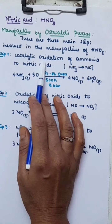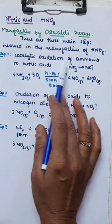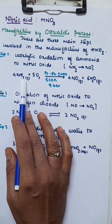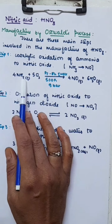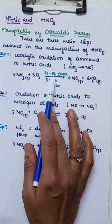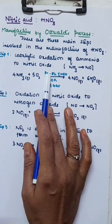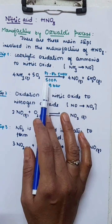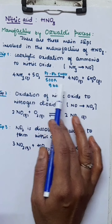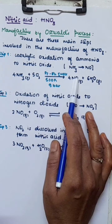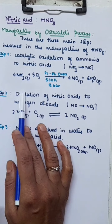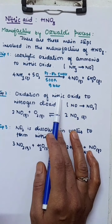The first step is the catalytic oxidation of ammonia to nitric oxide. Ammonia is oxidized by atmospheric oxygen in the presence of platinum-rhodium gauze at 500 Kelvin and 9 bar pressure to form nitric oxide.